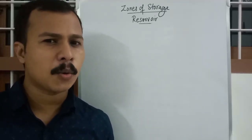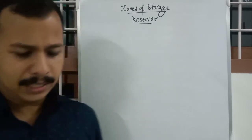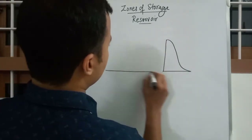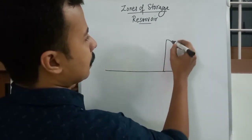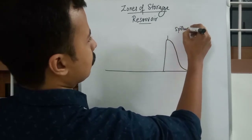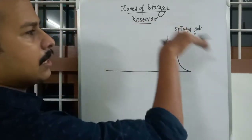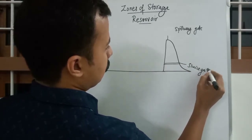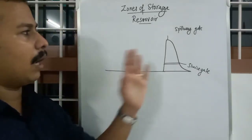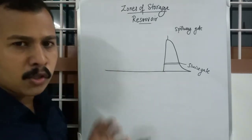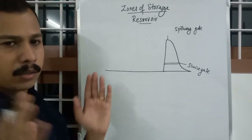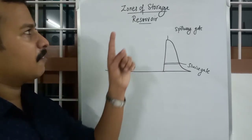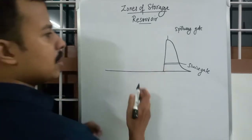Today our topic is zones of storage in a reservoir. We construct a dam for the purpose of having a reservoir. This is a rough sketch of a dam, with a spillway gate through which overflow happens, and a sluice gate. The river bed is here, and we construct this dam to store a large amount of water. The stored water in the reservoir is divided into five zones of storage.